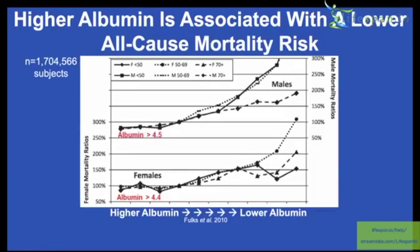What about all-cause mortality risk? This is a big study — 1.7 million subjects — and we're looking at female mortality ratios on one side and male mortality ratios on the other side. The x-axis goes from higher albumin levels to lower albumin levels.